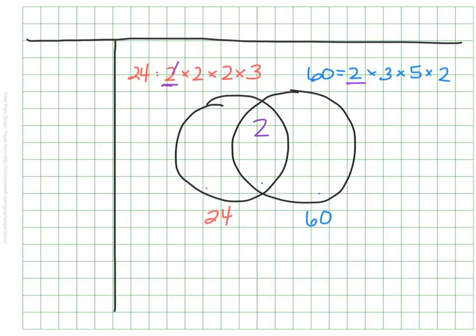There's another 2 here — I'm going to say I'm done with that one. There's another 2 on the list of 24's prime factors, and there's another 2 on 60's list, so I'm going to put that 2 in the middle as well. But now I see that there is a third 2 on 24's list, but there's not an extra 2 on 60's list that matches with it. It's not shared with 60, so I'm going to put it just on the side of 24. Now I see a 3 here, and there's also a matching 3 on 60's factorization, so I'm going to put that in the middle too, and I'll say I'm done with those.